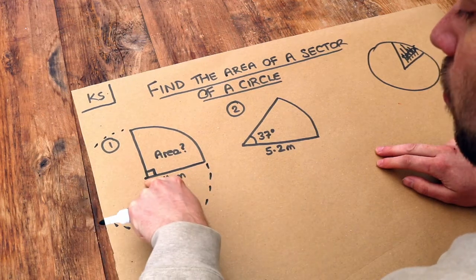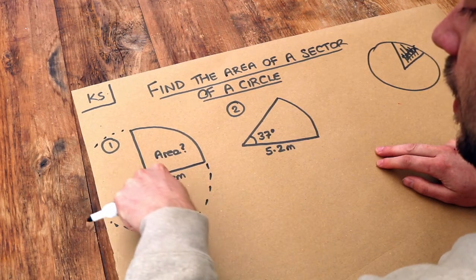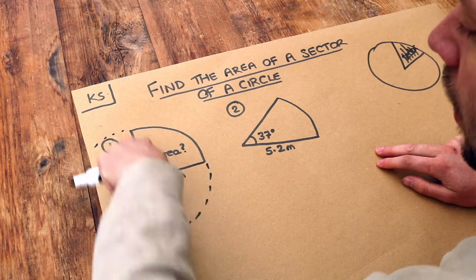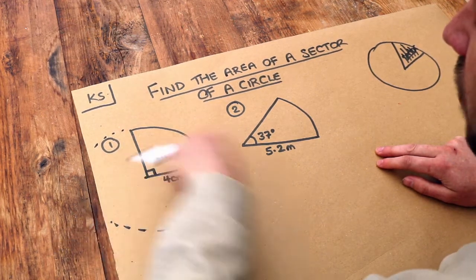because we know the angle around a point is 360, then 90 degrees we can see there's a quarter of that. And you can just see if I chop the circle into four bits, that's just one quarter of it.